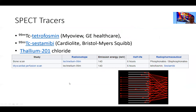Let's start with some of the common SPECT tracers. We typically use technetium-based tracers — either MyoView or Cardiolite — and thallium, whose use is becoming less common in the US because of its high radiation dose, prolonged half-life, and poor image quality.